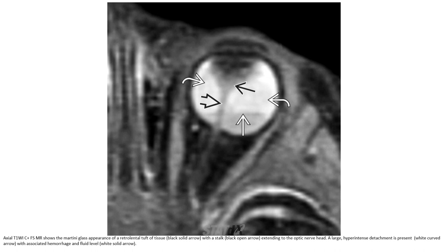This is an example of PHPV, where the image shows the appearance of a retrolental soft tissue mass with a stalk extending to the optic nerve head. A large hyperintense detached vitreous is present with associated hemorrhage and fluid level.